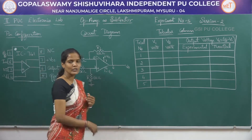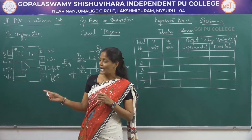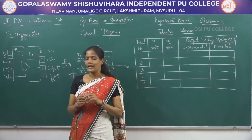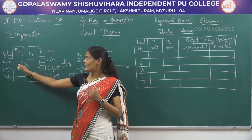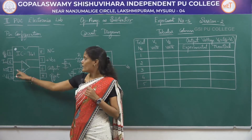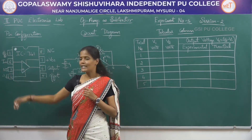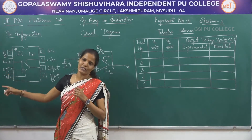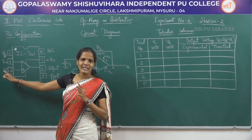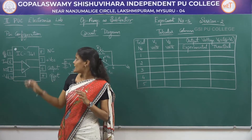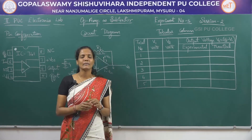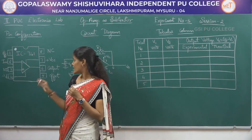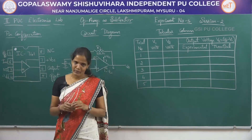We are going to use the same IC, that is the 741 IC, where pin number 1, pin number 8, and pin number 5 will not be used. Pin number 2 is the inverting input terminal and pin number 3 is the non-inverting input terminal. Pin number 7 and pin number 4 are the pins where we give the power supply for the IC, and pin number 6 is the output pin.